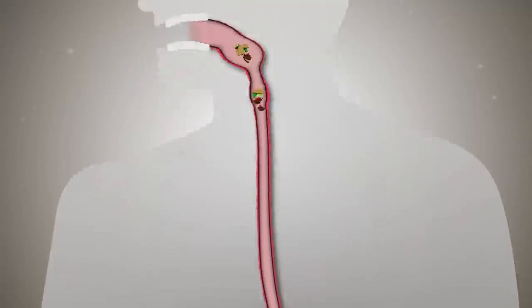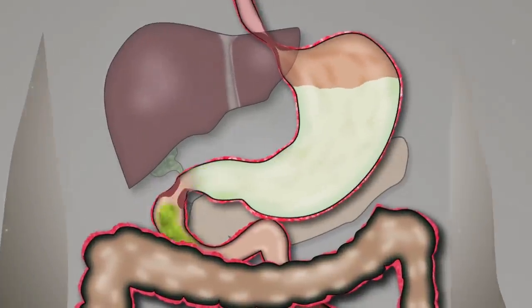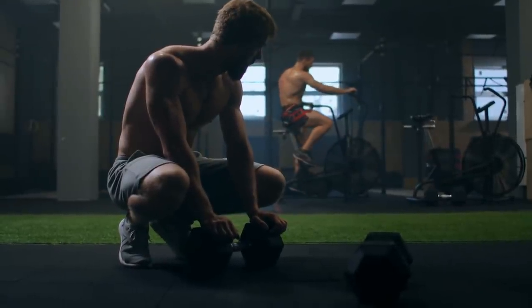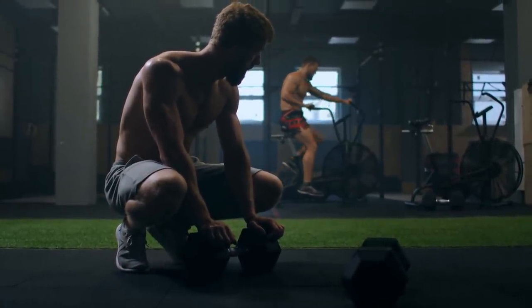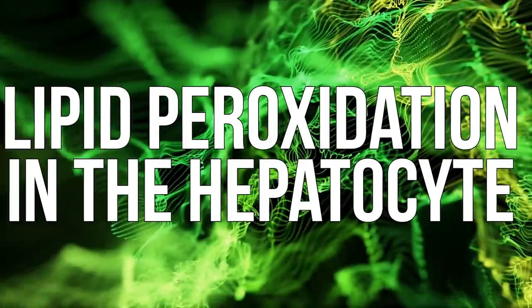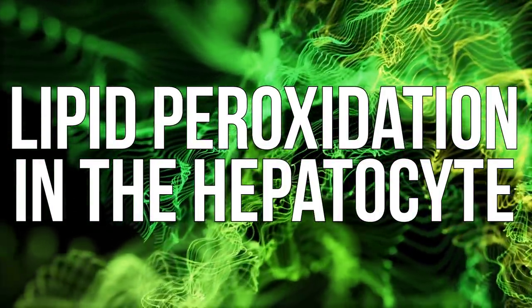So what happens is when we digest things, when we metabolize things, we have what are called reactive oxygen species. Basically we have exhaust that comes as a result of metabolism. And this exhaust, reactive oxygen species, can trigger what is called lipid peroxidation in the hepatocyte. A hepatocyte is a liver cell, and lipid peroxidation is the oxidation of fats. So if we have hepatocytes whose cell membranes are made out of fats and lipids, and those become oxidized, that is called lipid peroxidation.